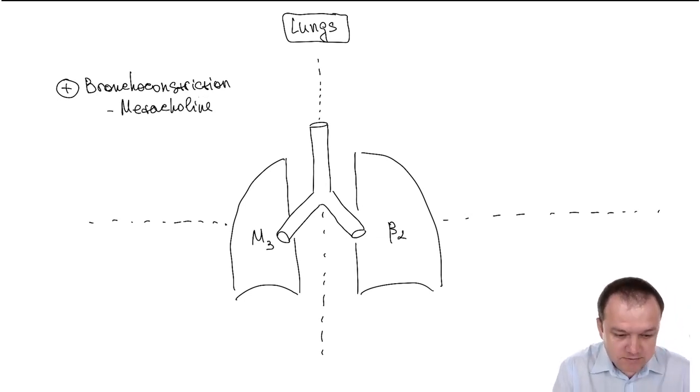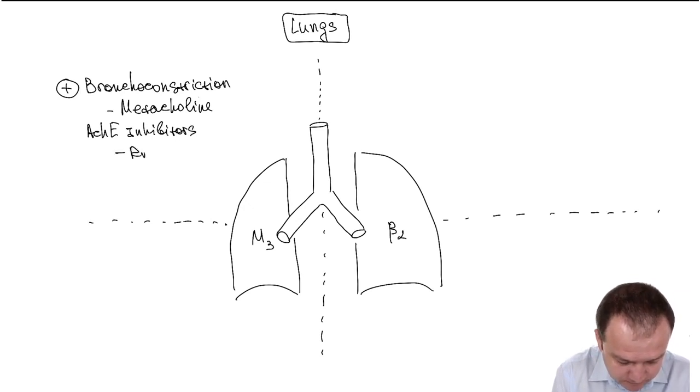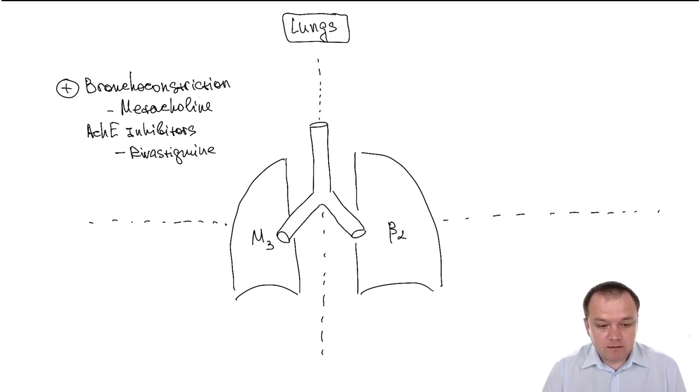Metacholine causes bronchoconstriction and is used for bronchoprovocation testing. We have acetylcholinesterase inhibitors like rivastigmine, physostigmine, donepezil, and others. So activation of M3 receptors causes bronchoconstriction.